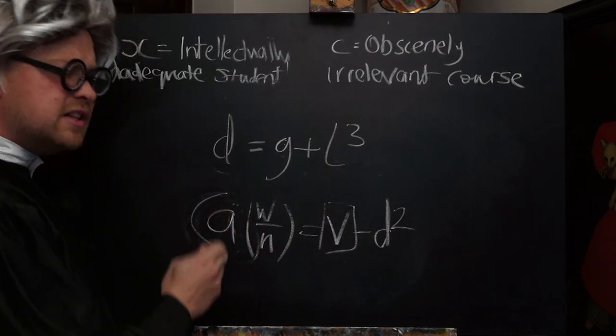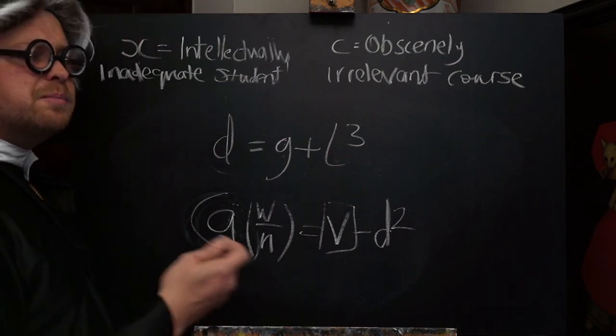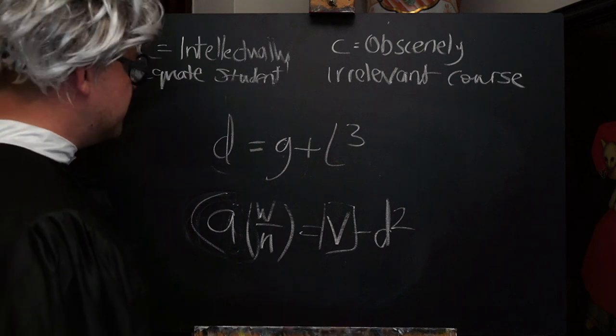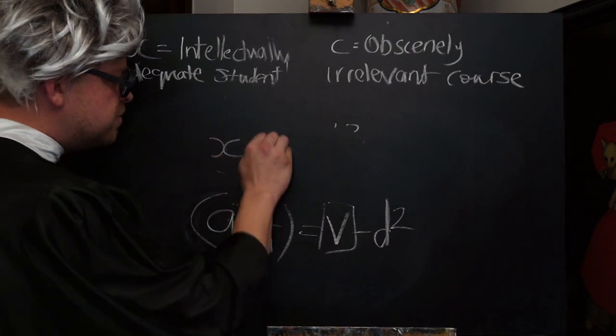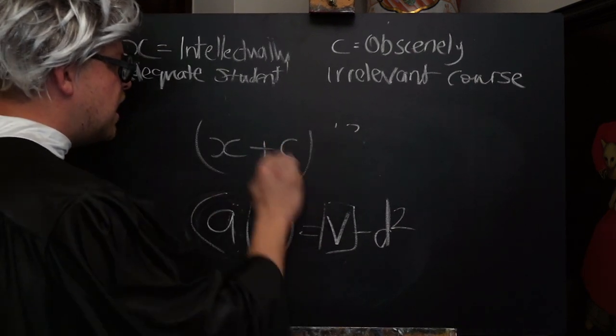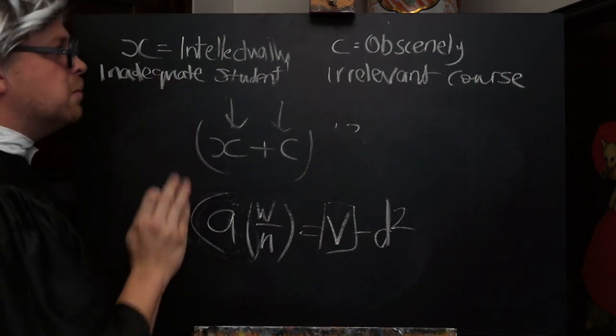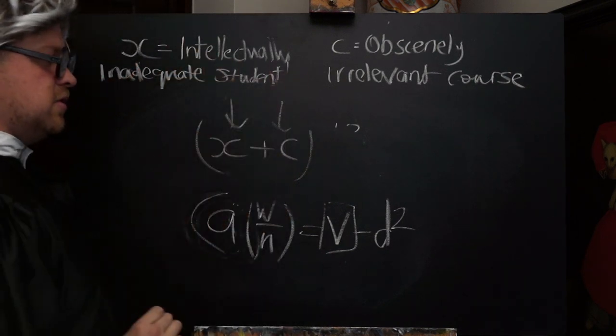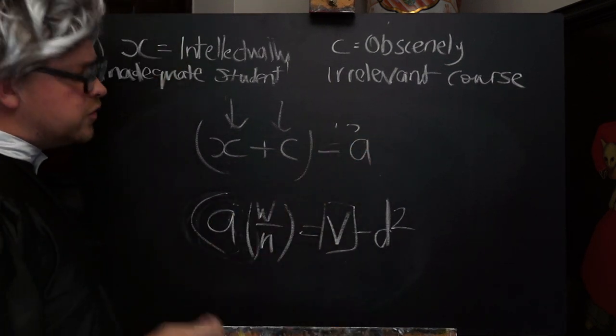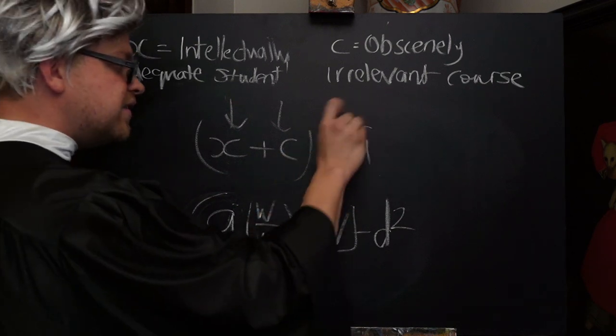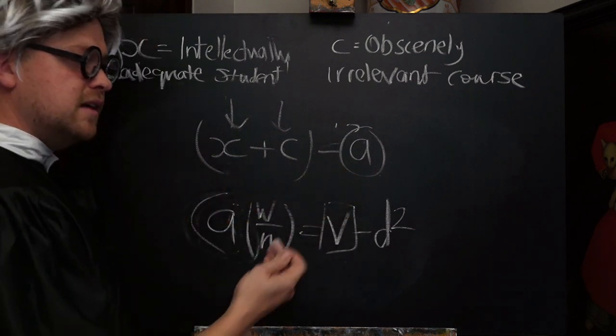Now, of course, there is nothing inherently negative about Activism. Without Activism, we would not have the great scientific breakthroughs that we have throughout history. However, when the X value and the C value are positive, we then get Intellectually adequate student plus a relevant academic course. And this will mean that the A is a positive value also. This is the kind of Activism where the Activist embodies the behavior that they demand in others.